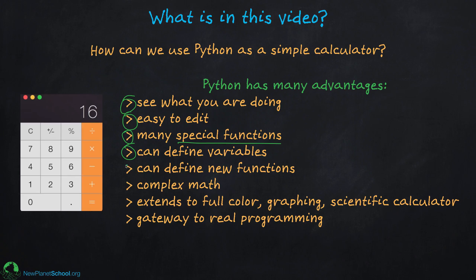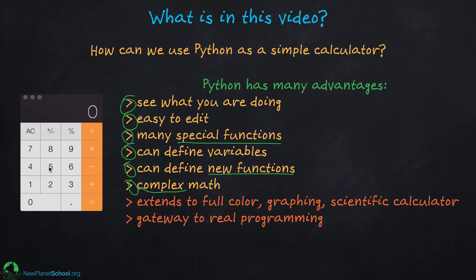One of the really neat things Python allows you to do is define new functions. If you have to do the same thing over and over — say, a polynomial you need to evaluate for a math class — you can define that as a function using something called lambda. It also allows mathematical operations with complex numbers and extends to a full-color graphing scientific calculator, which I'll cover in later videos.